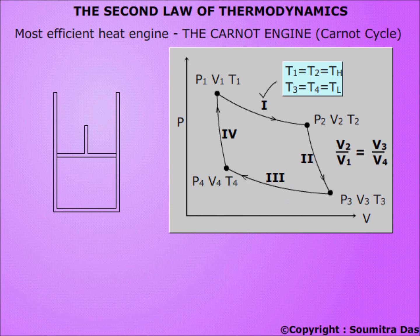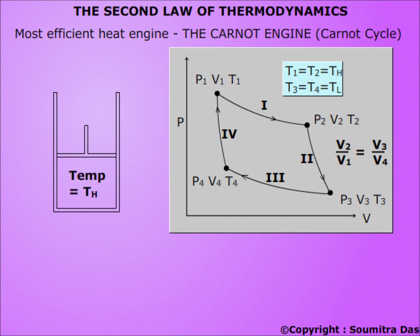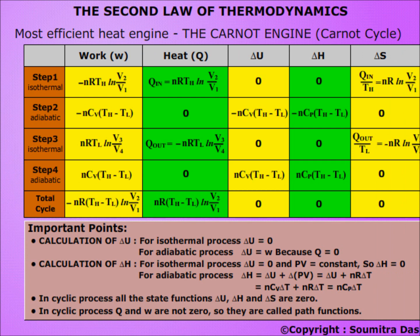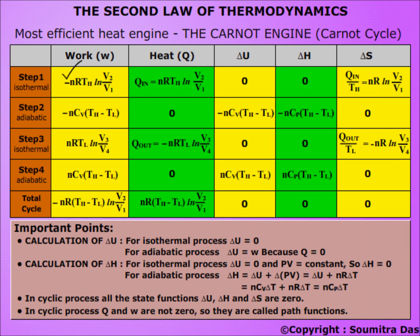Step 1 is an isothermal expansion at the higher temperature TH. The ideal gas in the cylinder absorbs heat from a reservoir at temperature TH. The gas expands isothermally and reversibly and does work on the surroundings. The work done is negative because work is done by the system, but Q = −W for an isothermal process. Therefore, heat absorbed = nRTH · ln(V2/V1), which is positive.